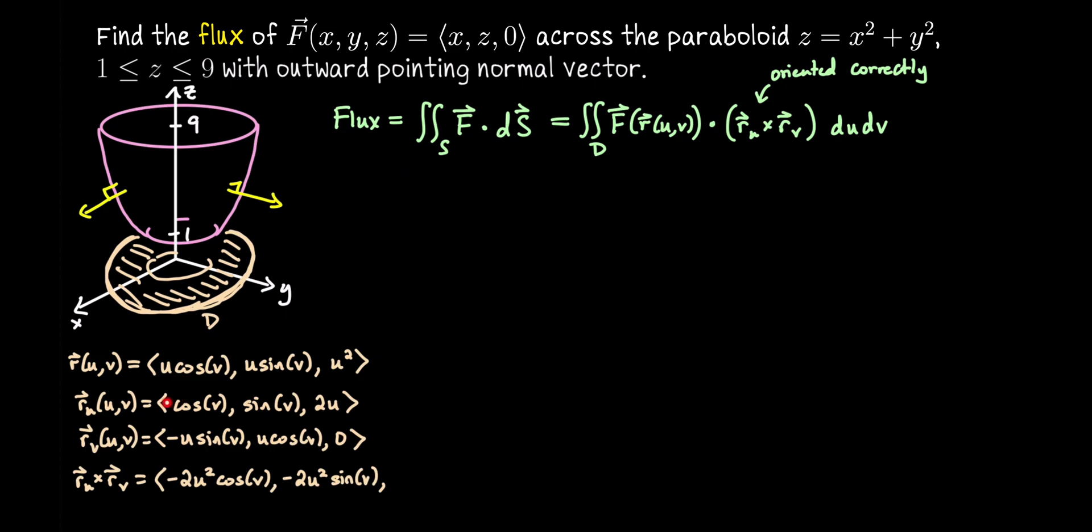And then the third component is cosine v times u cosine v minus negative u sine v times sine v. That's going to be u cosine² + u sine². Since cosine² v + sine² v is 1, overall that's just u.